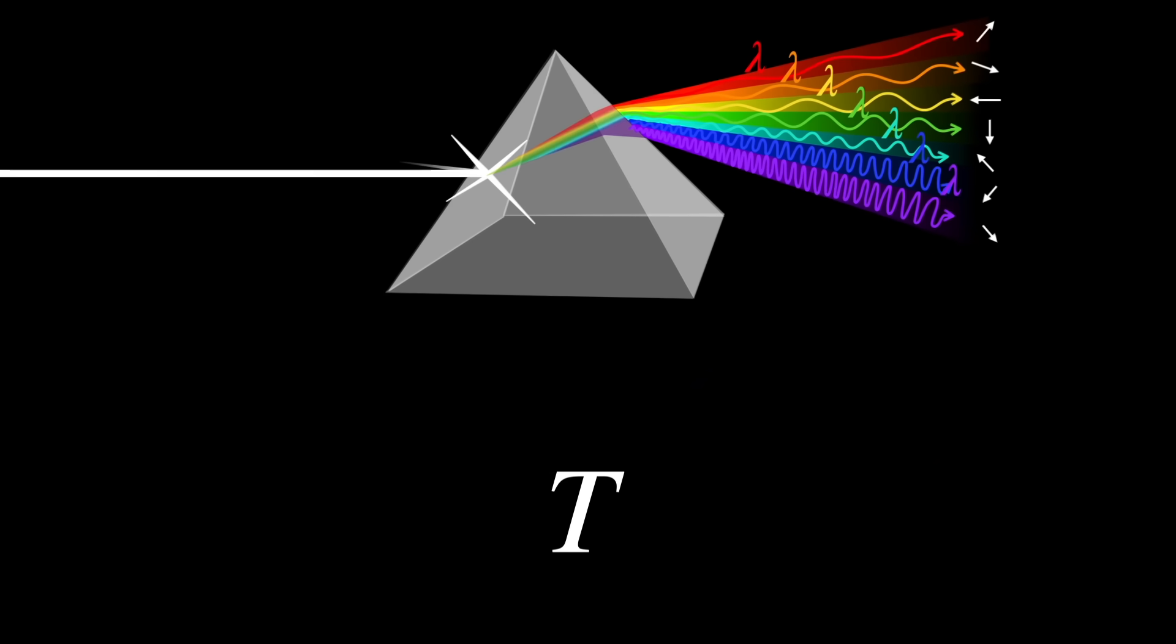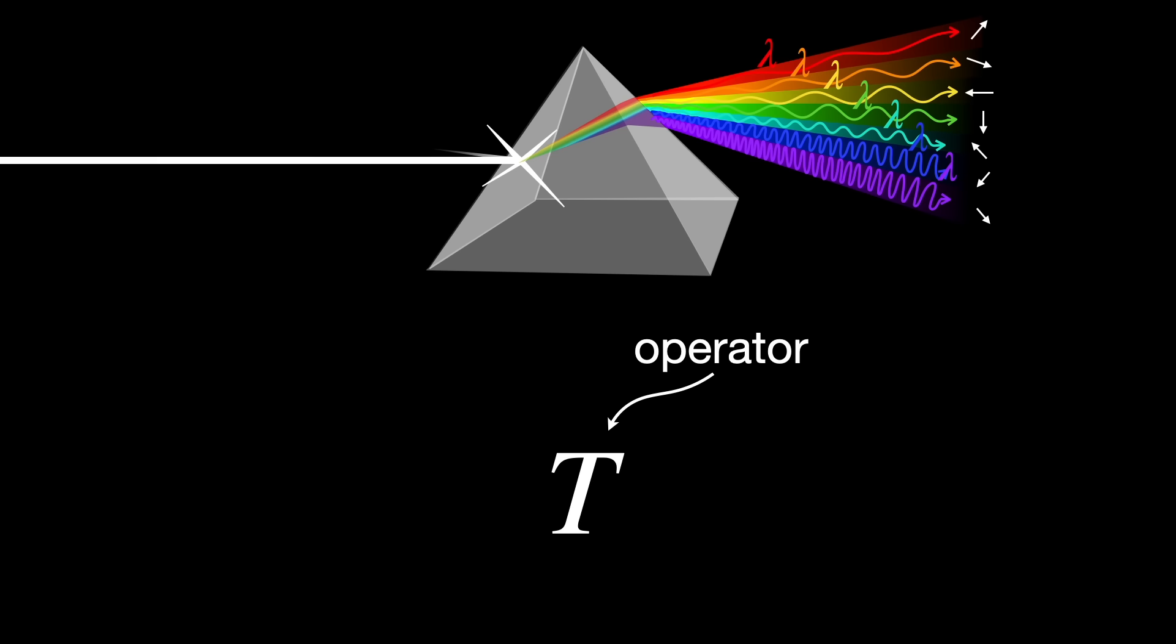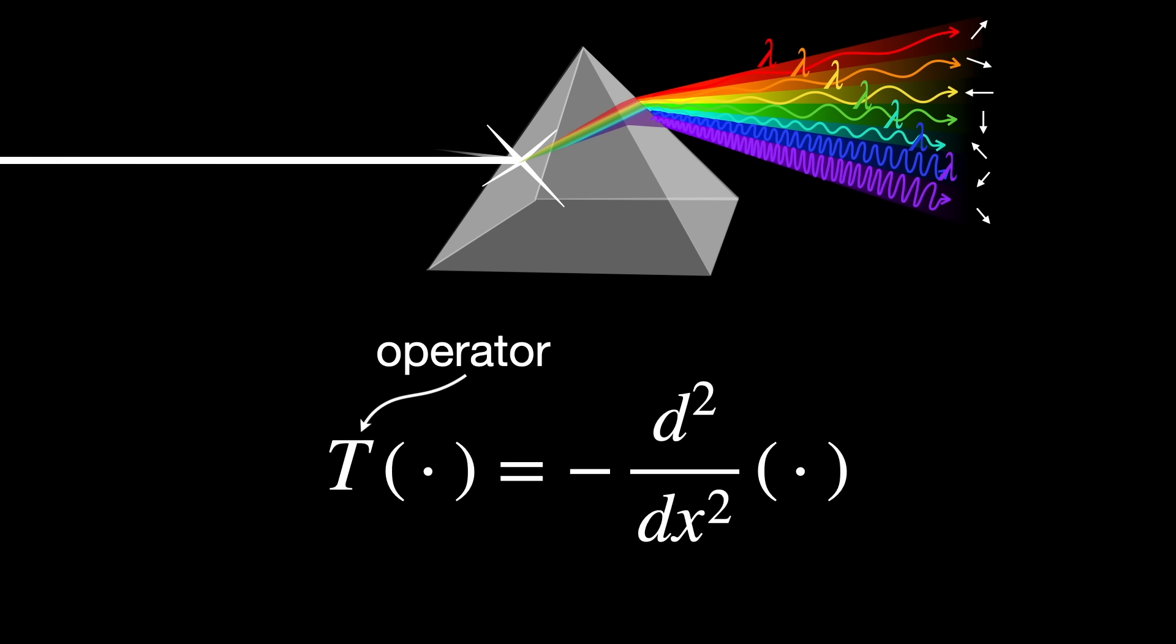The spectral theorem does the same for some operators, especially in Hilbert spaces. A complicated operator, like a sort of white light transformation, might seem abstract at first.